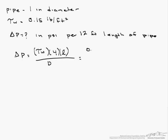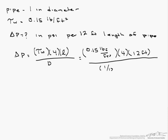And so this equals 0.15 pound force per foot squared times 4 times our 12 foot length divided by our diameter, and we want to keep that in feet, so that is 1 divided by 12.